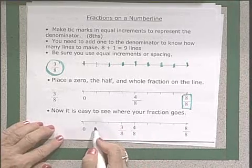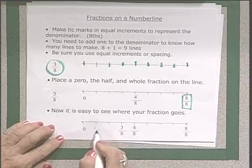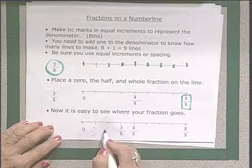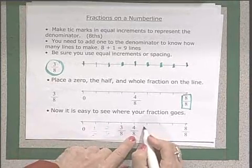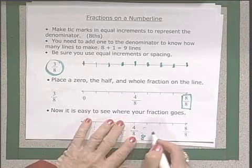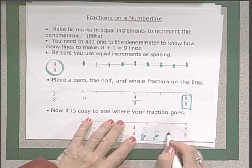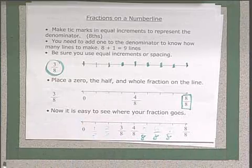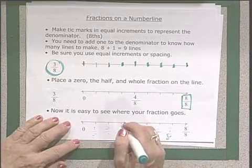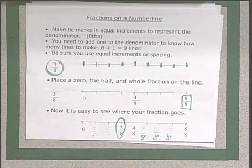And some students like to number all the spaces, so you could say one eighths, two eighths, three eighths, four eighths, and continue numbering five eighths, six eighths, seven eighths, and eight eighths to see all the numbers, and then just pick your number, three eighths.